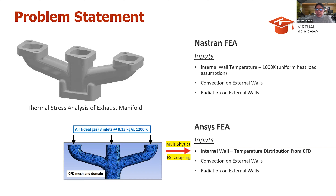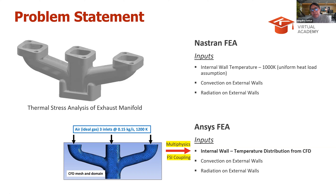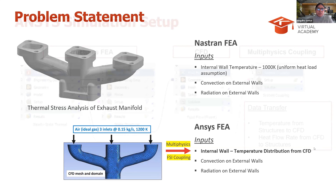This is where ANSYS can help — instead of assuming a constant wall temperature, we can actually get the temperature distribution from doing a CFD analysis, a fluid flow analysis, and then coupling that with your structures analysis. What Joel and I are going to show is the combined effect of the heat loads from the fluid flow problem using a CFD solver, coupled with the heat load conditions applied on external walls in the FEA solver — convection and radiation.